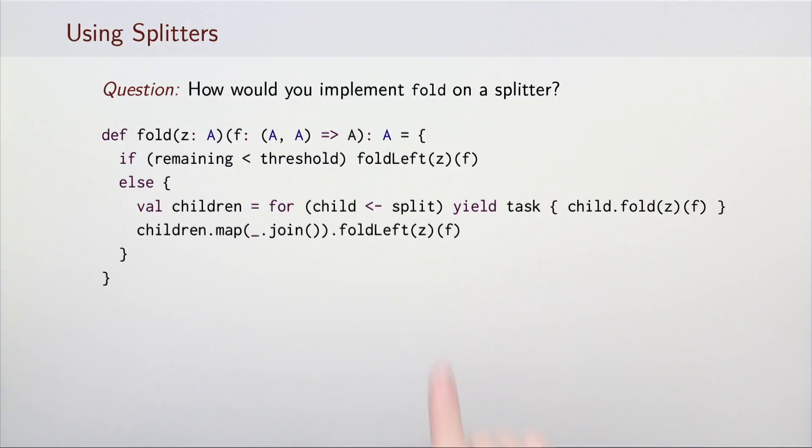Otherwise, we branch the parallel reduction tree by calling split and spawning a task for each of the child splitters. Each of these tasks recursively calls fold in parallel. The tasks are then joined, and when we have a collection with their values, we call foldLeft to merge those values. From the previous weeks, we know that we can optimize this method further by, for example, invoking fold on one of the children sequentially.